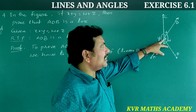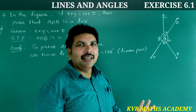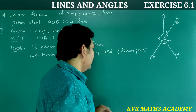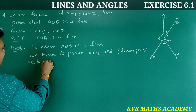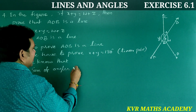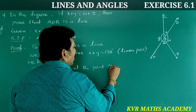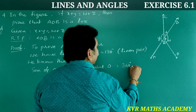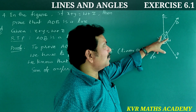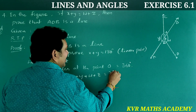We know that the sum of all angles at a point around O is equal to 360 degrees. So x plus y plus z plus w equals 360 degrees.